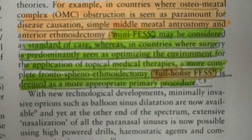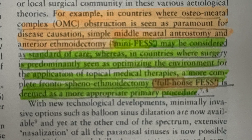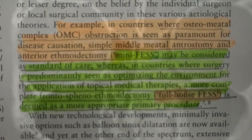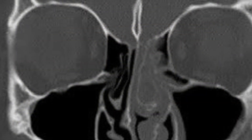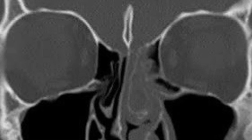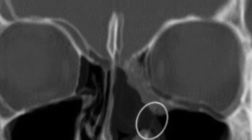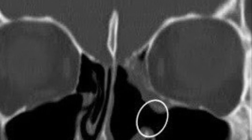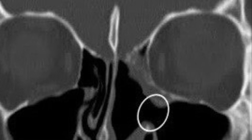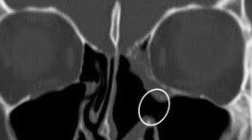The difference between mini FESS and full house FESS: in mini FESS, if there is obstruction in the osteomeatal complex, you have to remove this obstruction and open the middle meatus antrostomy and anterior ethmoidectomy. Disease limited to the osteomeatal complex with opening of the middle meatus is what defines mini FESS.